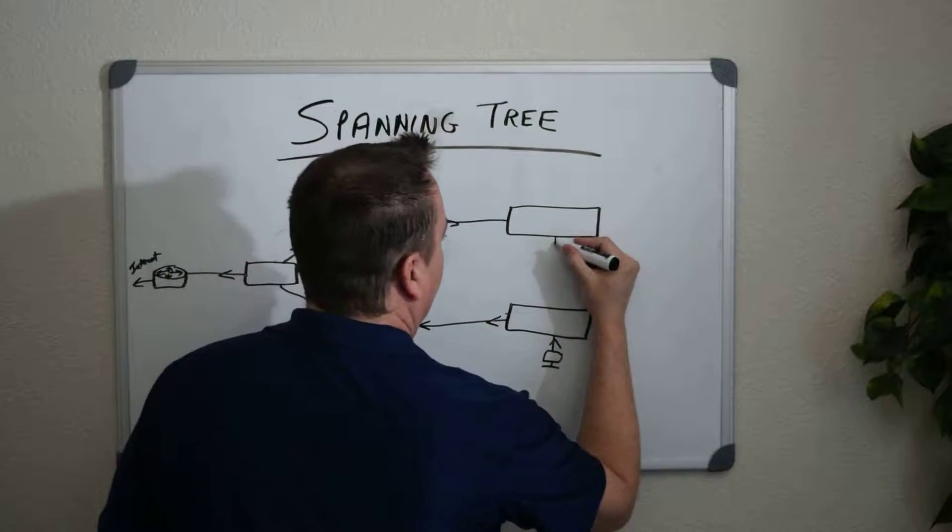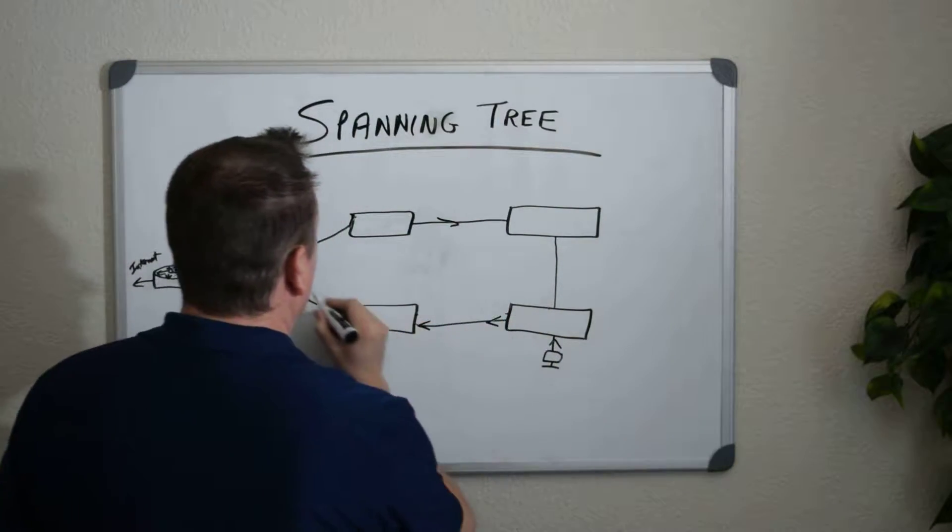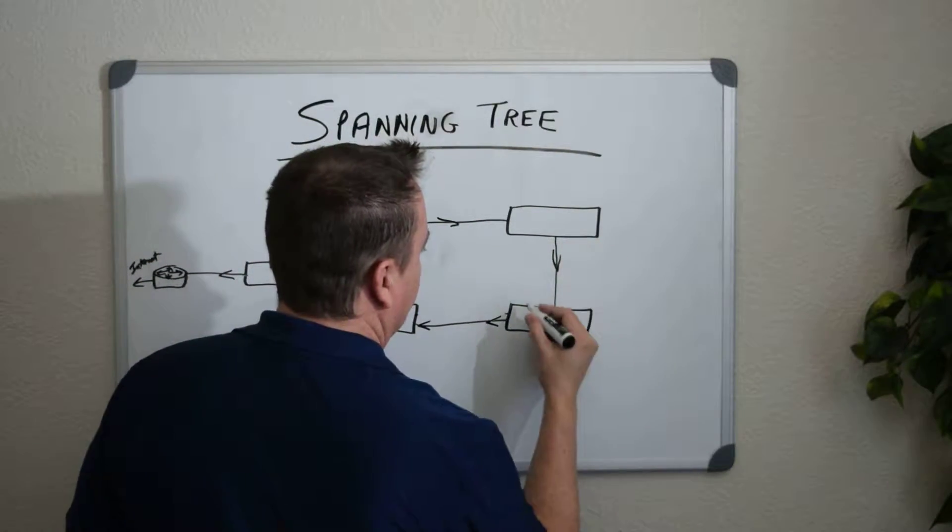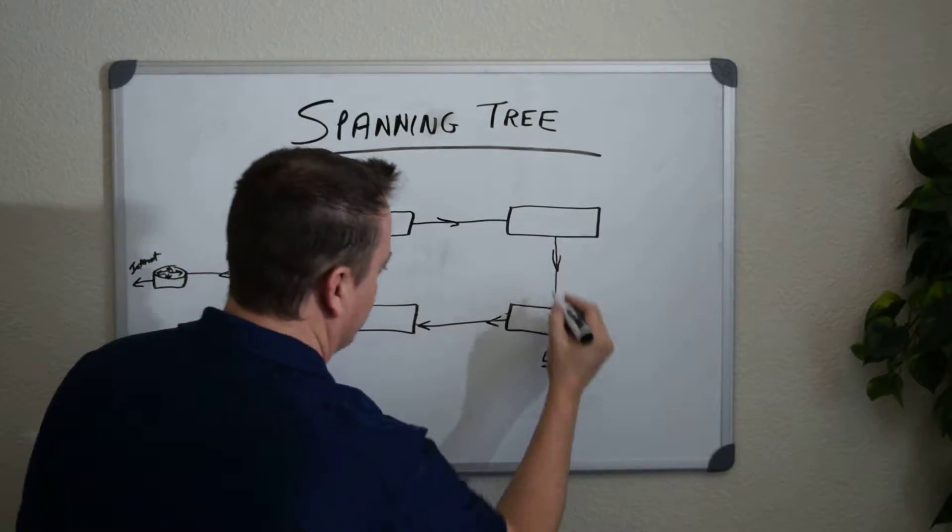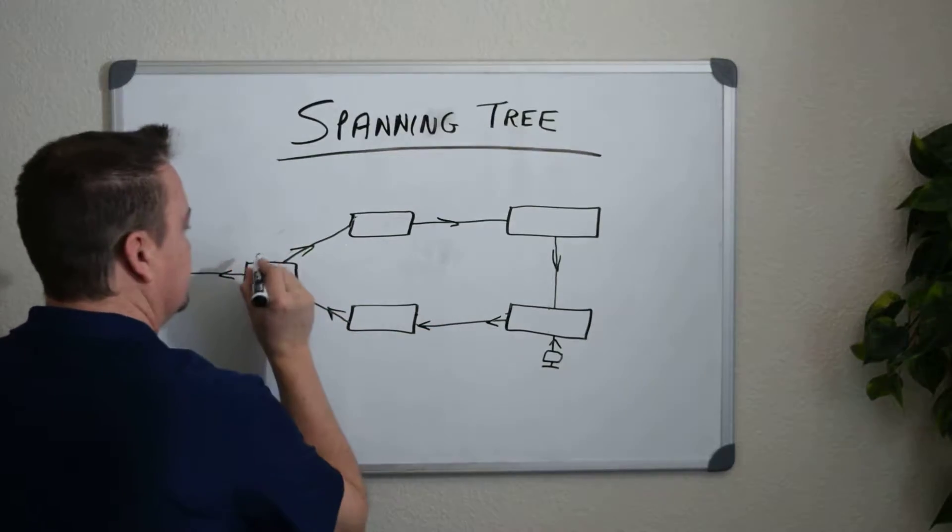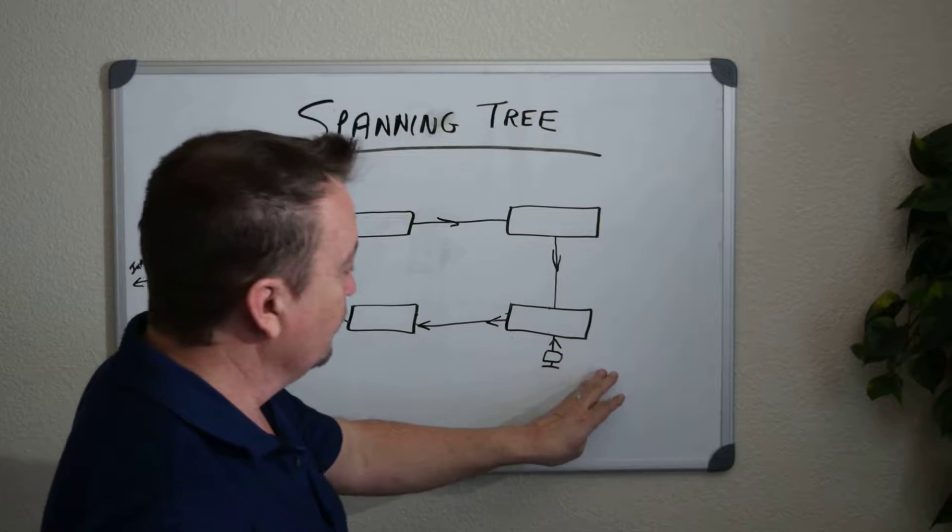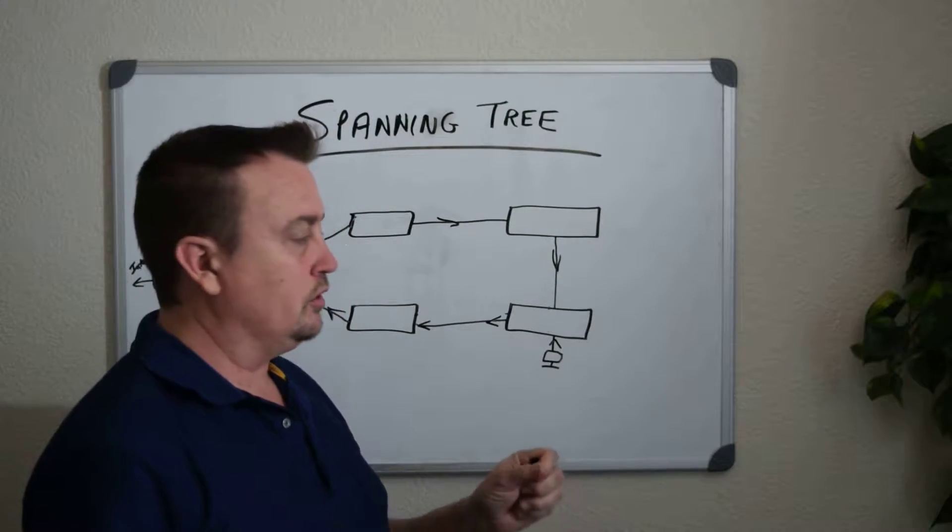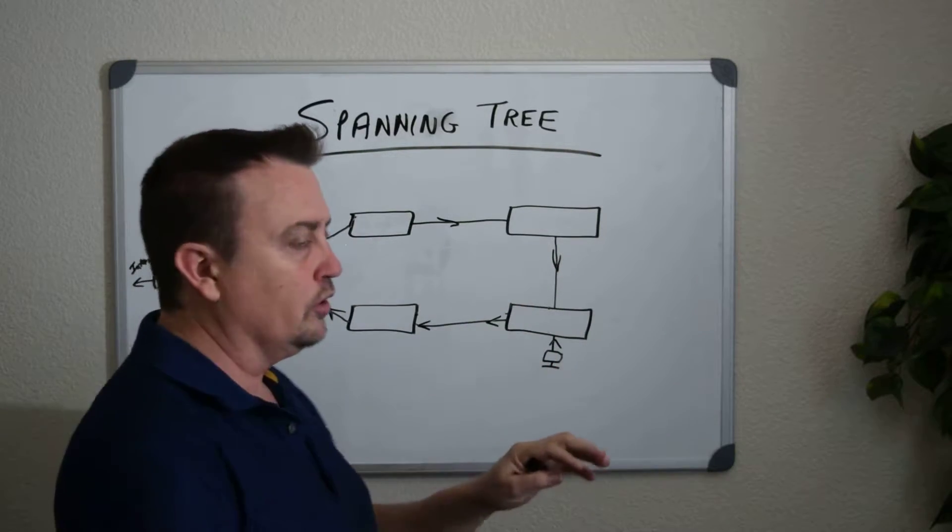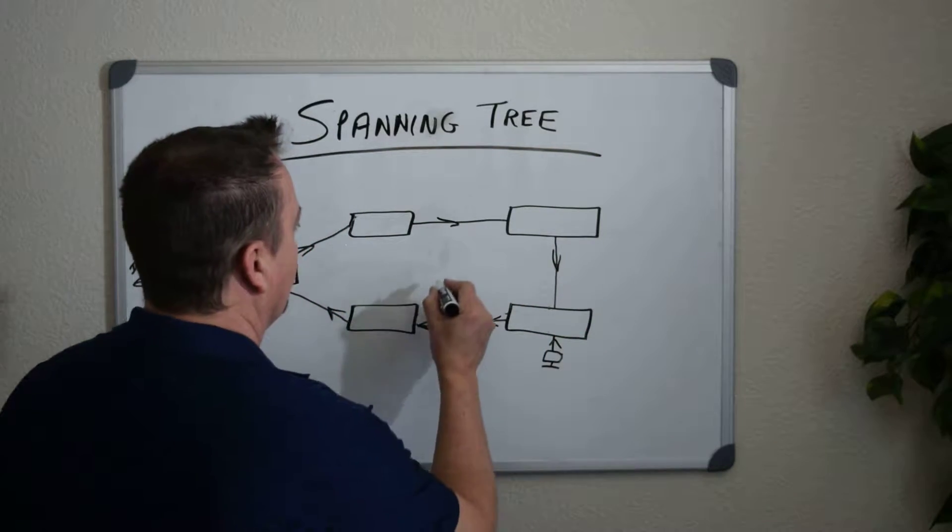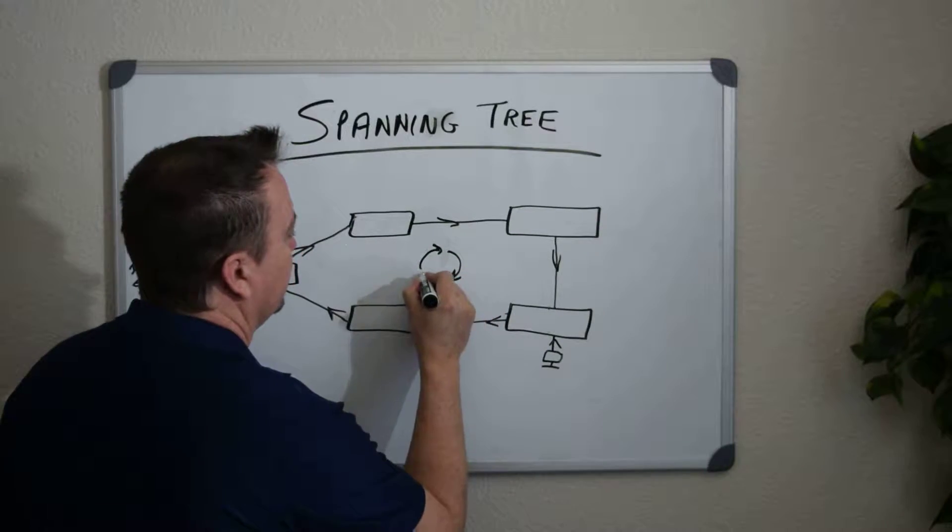When you create a loop, a physical loop in your topology, what will happen is these switches will start sending that same broadcast into the same circle repeatedly, because every time they receive a broadcast, they broadcast it out the other interfaces. And this happens over and over again. If you start getting more than one broadcast, you can get what's called broadcast radiation. With a loop on your network, you get broadcast radiation. They start going in a circle over and over again around this loop.